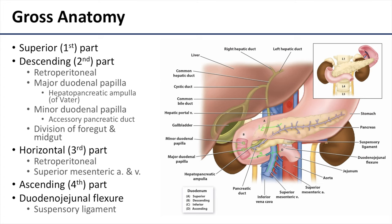The fourth or ascending part of the duodenum is supported by a suspensory ligament, also known as the ligament of Treitz, and then it feeds into the jejunum and the remainder of the small intestine.